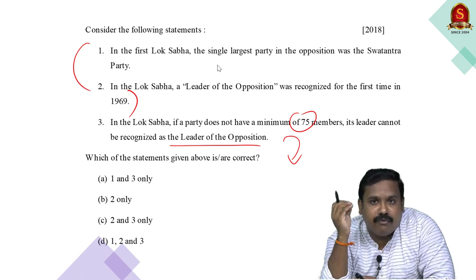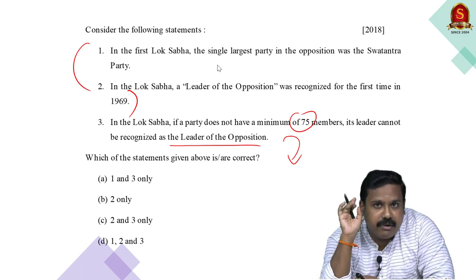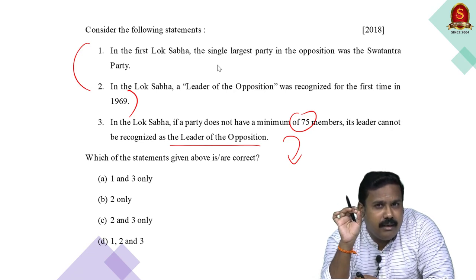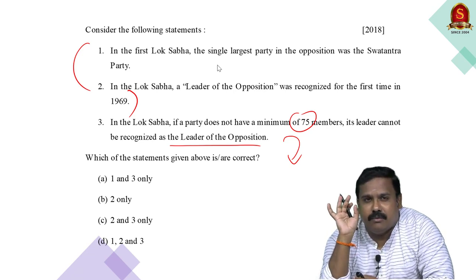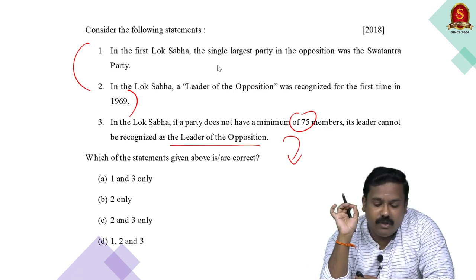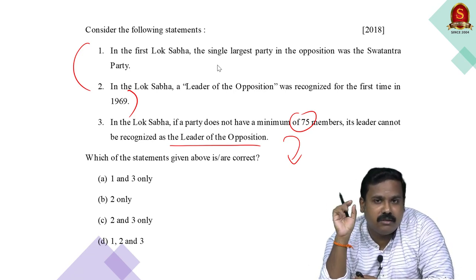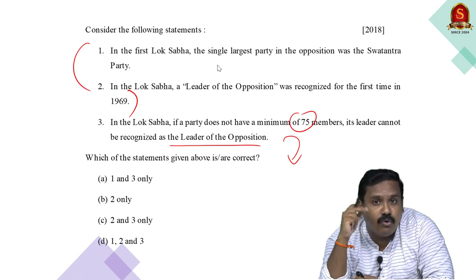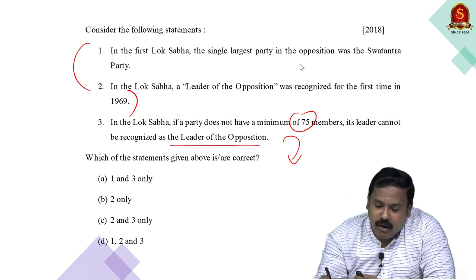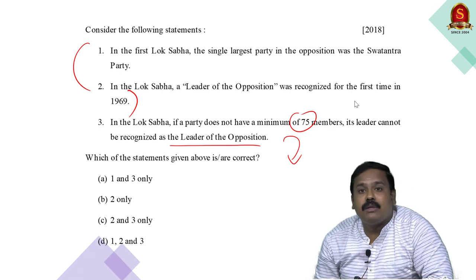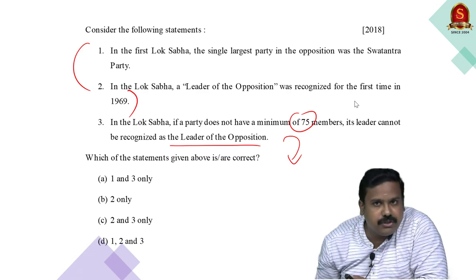Keep in mind: when you have a three-statement question, look for the one statement you can clearly eliminate. There will always be at least one clue — usually in non-factual, analytical statements where you can apply logic — and by eliminating the wrong option, you can get the answer even without knowing all the facts.